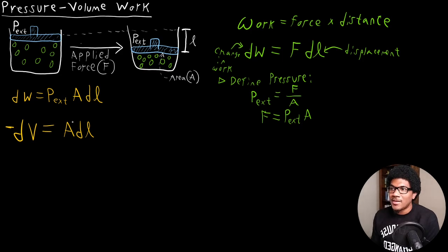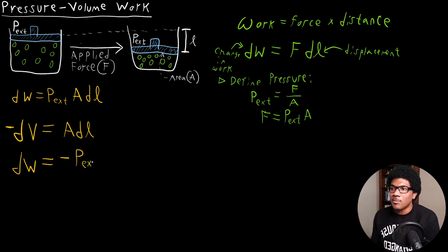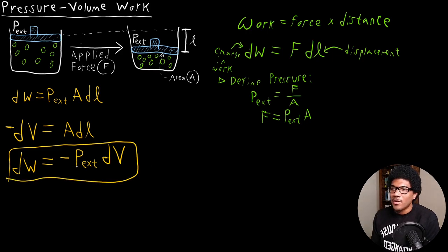We have this A·DL term that's related to the volume. Plugging this back into our work equation, we get an expression for pressure volume work in terms of pressure and volume. The equation for pressure volume work is: DW equals negative P external times DV.